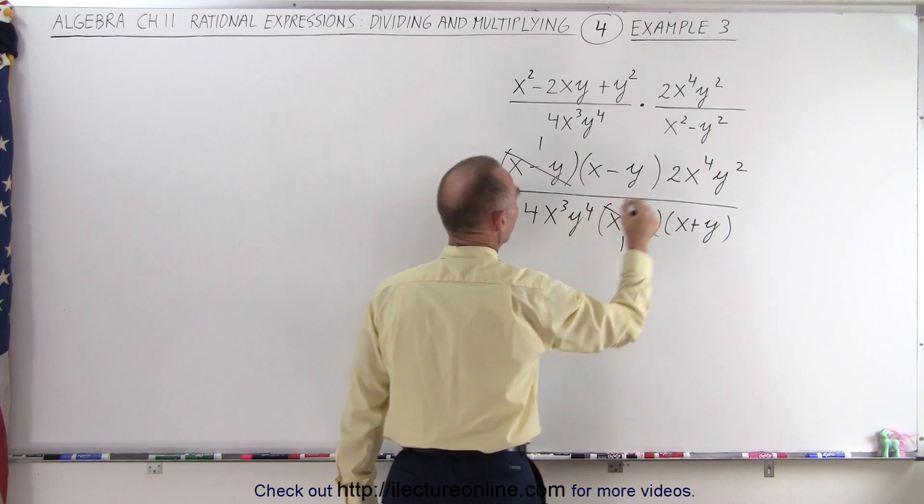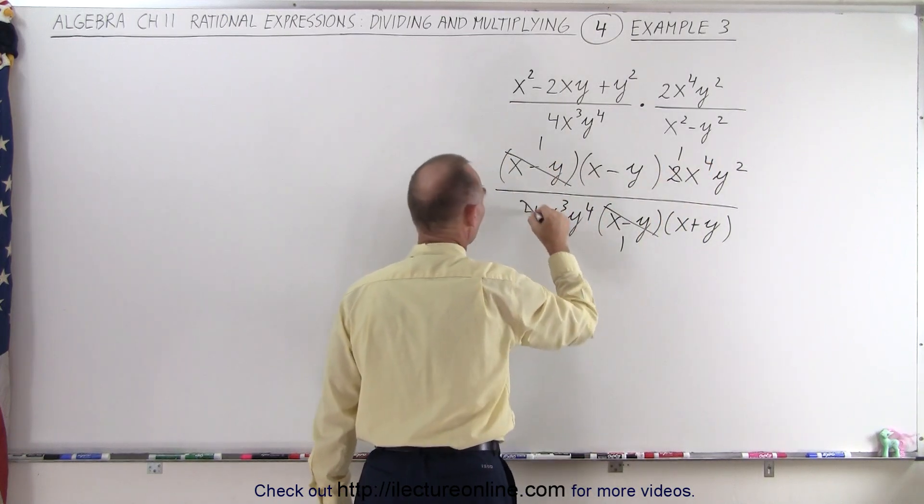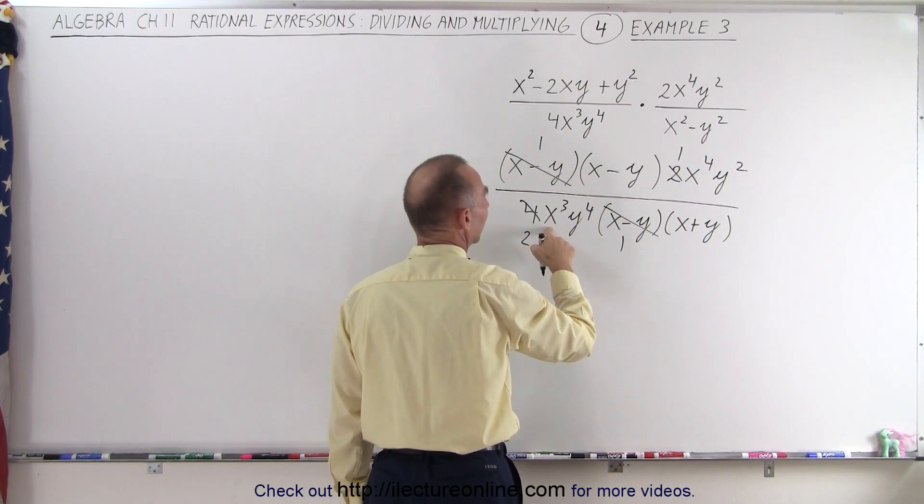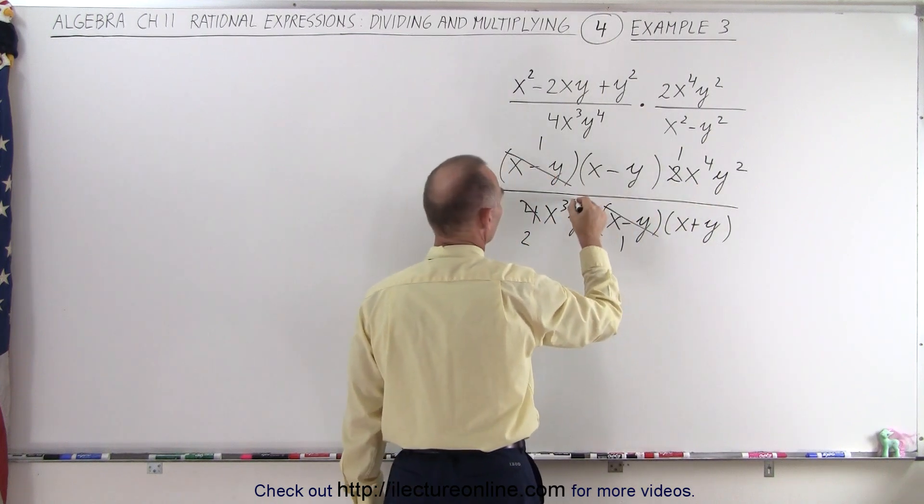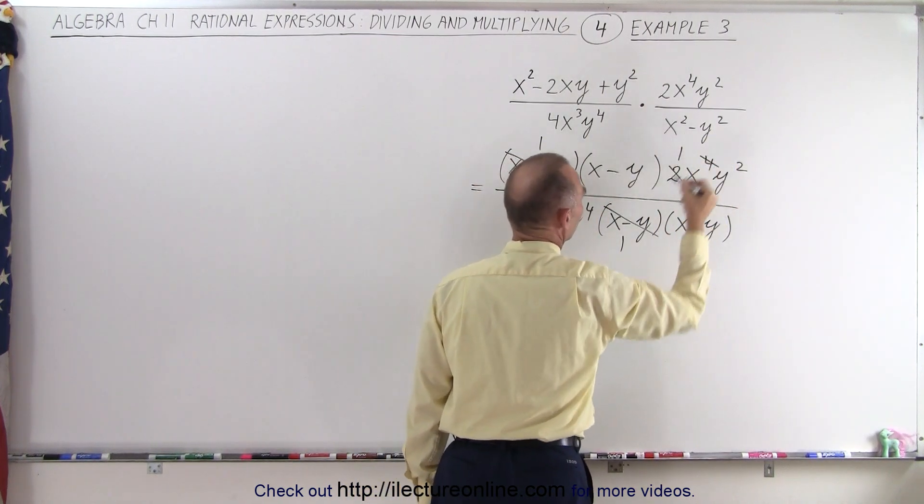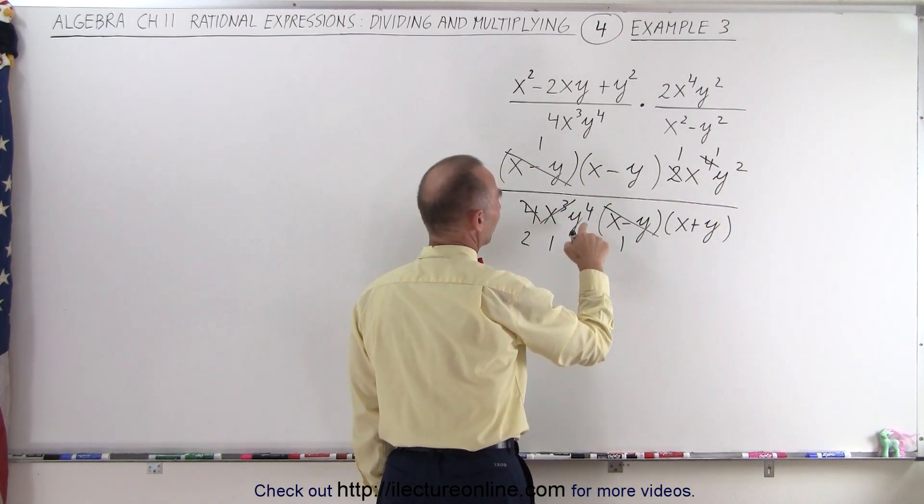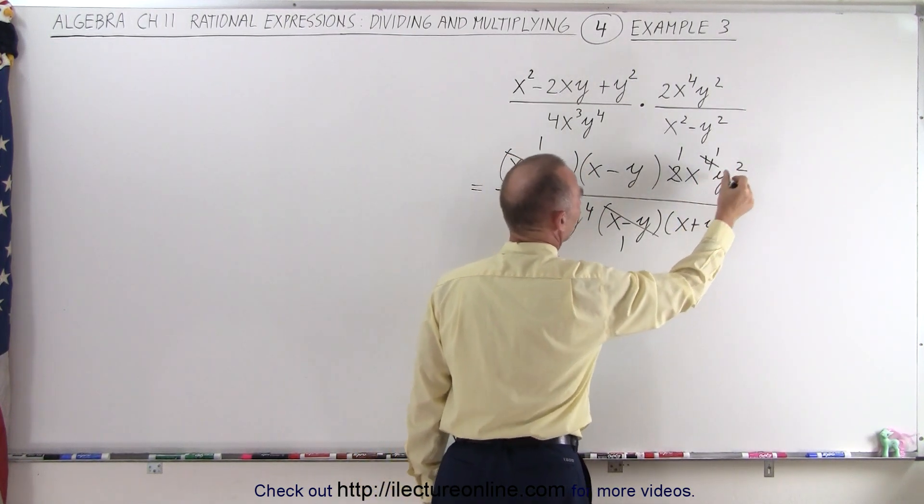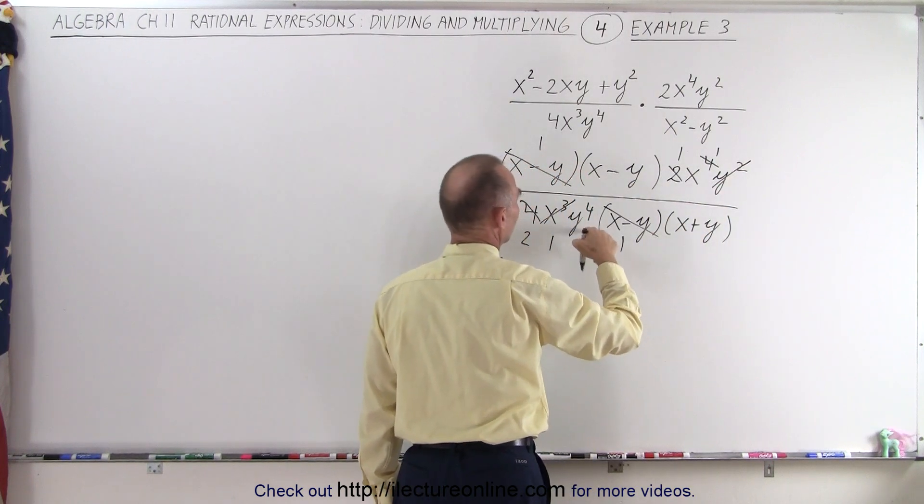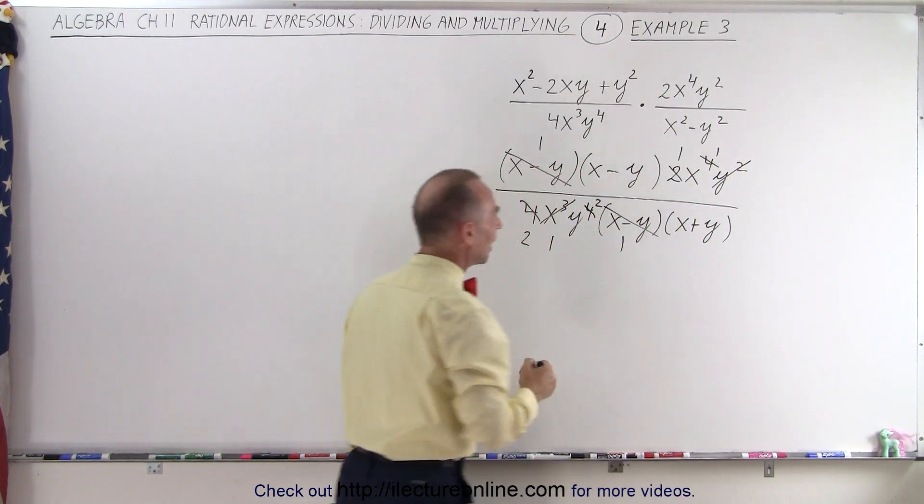We have a 2 and a 4, so 2 divided by 2 is 1, 4 divided by 2 is 2. We have an x cubed and an x to the fourth, so this becomes 1, and this becomes x to the first power. I can put a little 1 there. And then we have y to the fourth, y squared, so this cancels out with this, and this becomes y to the second power.